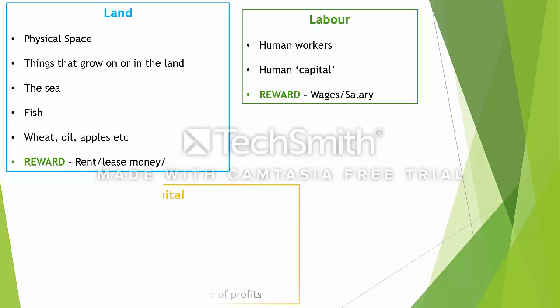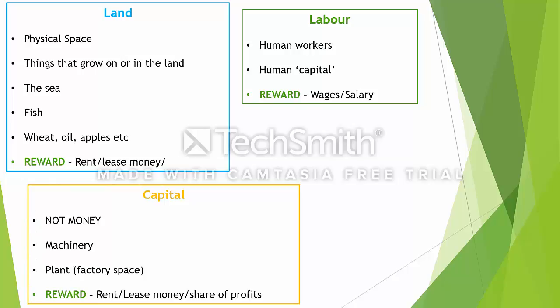So now we need to look at capital. It's very important that you do not think of capital as money in economics. Lots of people come to economics thinking capital means money and that we're going to learn about finance, but capital does not mean money. Capital means machinery or plant — factory space or workspace, for example. Capital is used in conjunction with labour and raw materials to produce products. Think about sewing machines — that's a form of capital that humans use to put cotton through to create a shirt.